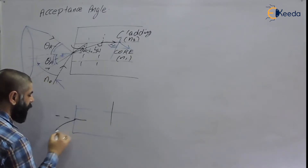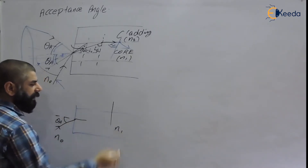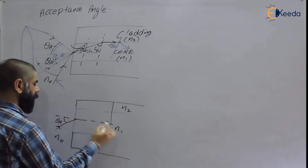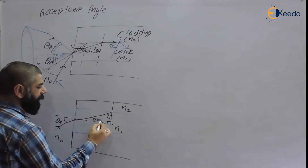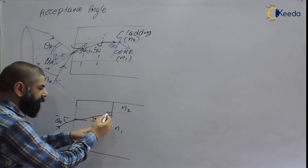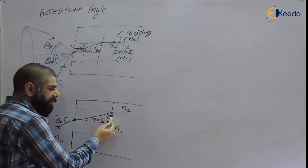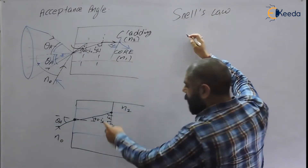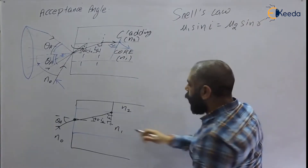At the input point, this is the acceptance angle — the angle of incidence equals the acceptance angle. The core has refractive index n1 and the cladding has refractive index n2. When the angle of incidence equals the acceptance angle, the angle at the core-cladding interface equals the critical angle ic, giving 90 minus ic at the core interface. We will use Snell's law at two points. First, applying Snell's law: mu1 sin(i) equals mu2 sin(r).